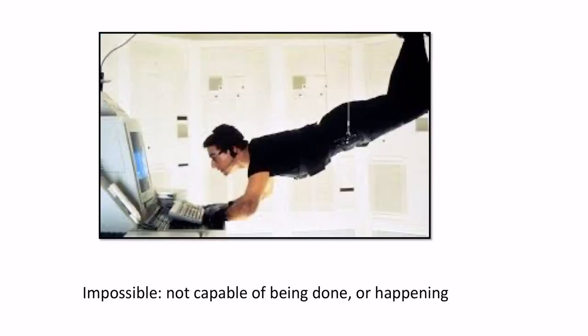Impossible is the next vocabulary word. Impossible means not capable of being done or happening. So in this picture, we see a man sort of floating in the air, working on his computer. And unless he's in space or in some kind of zero gravity capsule, that would be impossible. Can you think of something that's impossible?